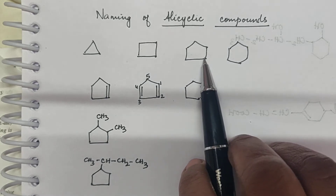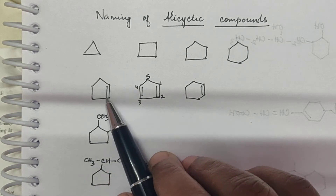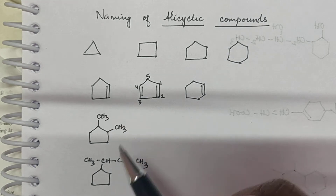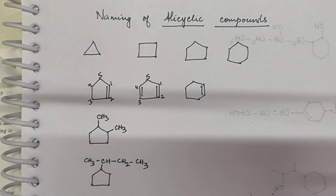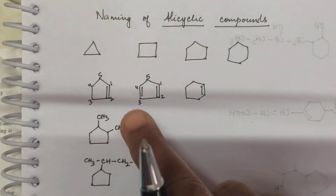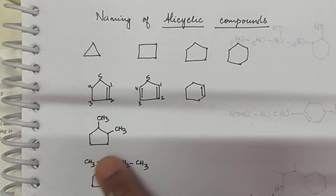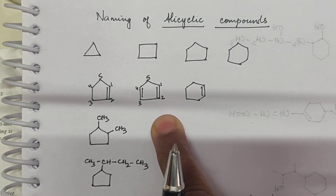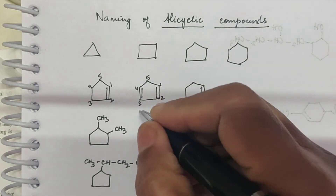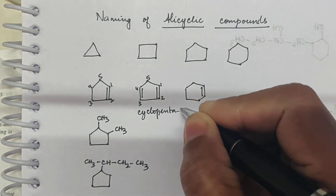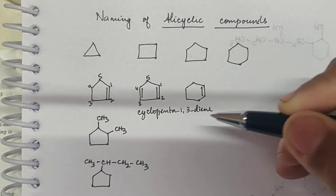This is cyclopropane, this is cyclobutane, this is cyclopentane, this is cyclohexane. Now this is called cyclopentene — it has five carbon atoms and there is a double bond, so the double bond is automatically taken between one and two. Then this is cyclopentadiene — you number the carbons: it is cyclopenta-1,3-diene, meaning the double bond is between one and two, and the other double bond is between three and four.